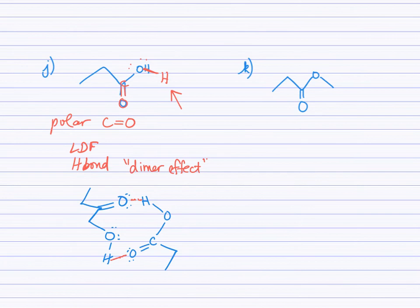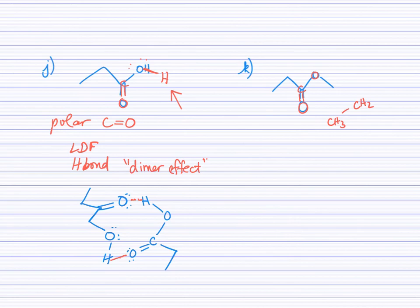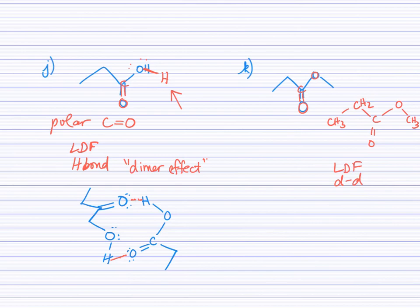In example K, the atoms look similar to part J — there is still a C=O — but instead of an O-H group, there is a CH₃ group attached to the oxygen. Redrawn, it's clear there is no O-H bond. Although this molecule is polar due to the C=O, there is no hydrogen directly bonded to an oxygen, so hydrogen bonding cannot occur. This molecule experiences dipole-dipole attractions but not hydrogen bonding. That concludes the review of attractions between particles.